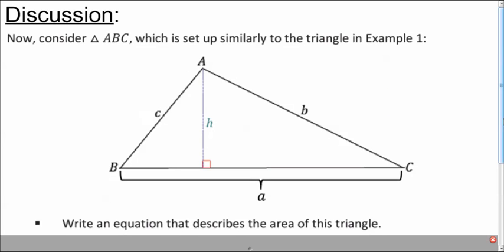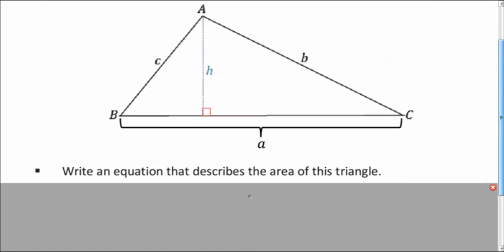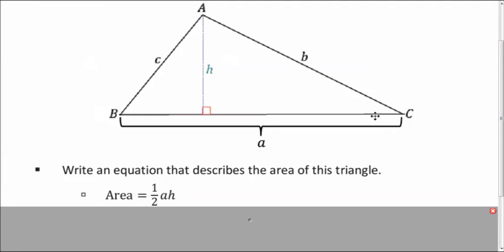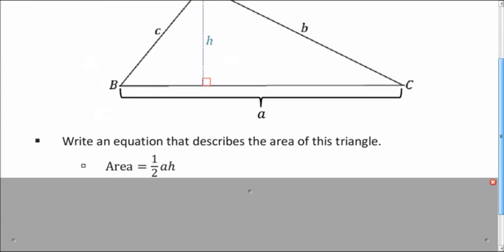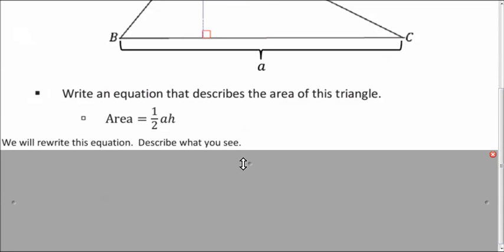So what if we had just a triangle where we don't know the side lengths? How can we write an equation that describes its area? Well, we already know the formula for the area of a triangle is one-half the base times the height. And in this case, the base would be a. So now we're going to apply some of the properties of real numbers and rewrite this in a way that might be more helpful.